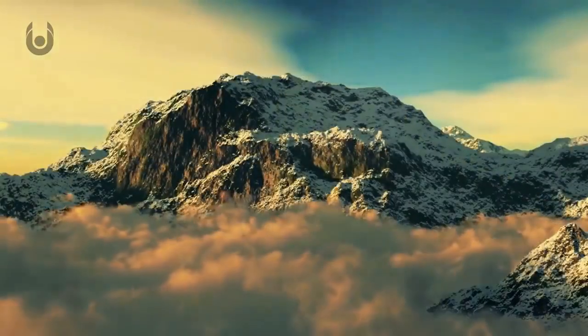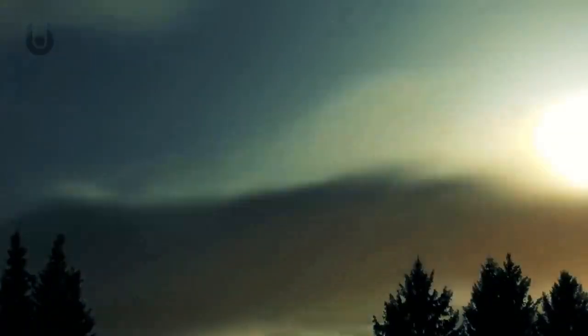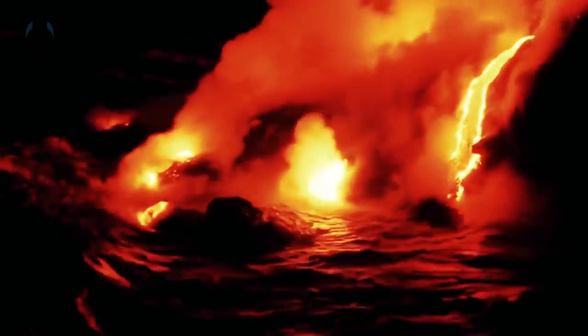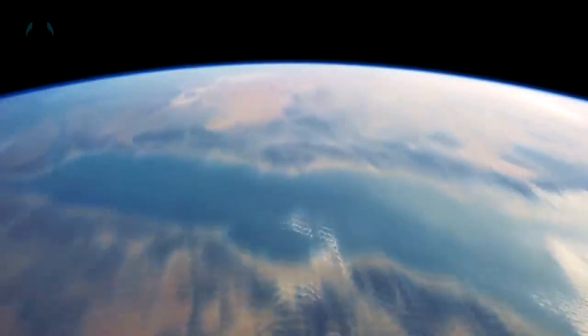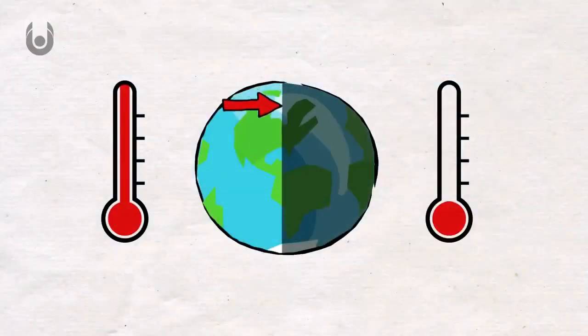There might still be places on Earth where the climate would be habitable, but on the two extreme sides, it might prove difficult for life to survive, assuming that anything survived the previous catastrophes. If there were any appreciable amount of life left on the surface of the planet, it would now have to survive in the twilight strip of land between the two halves.